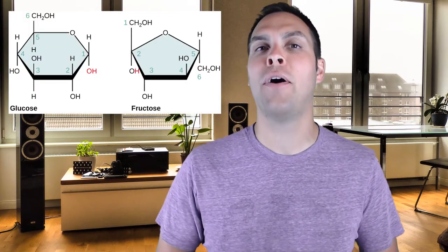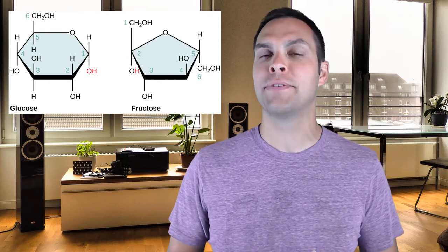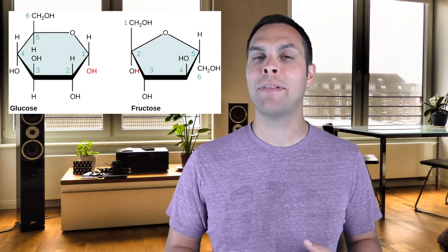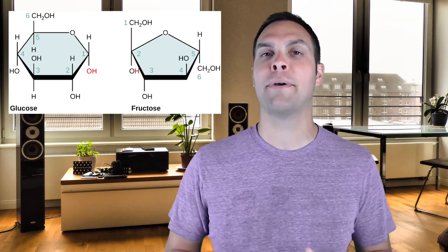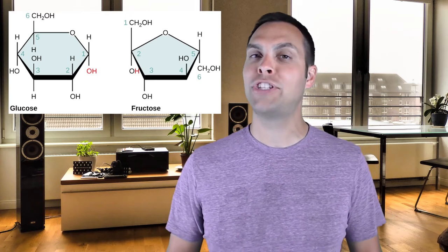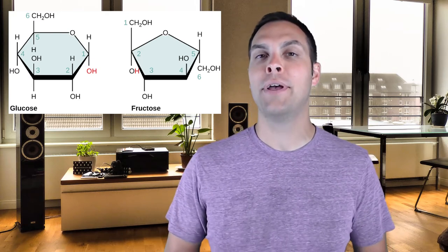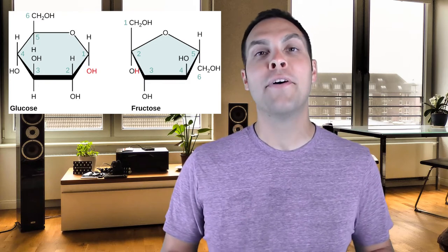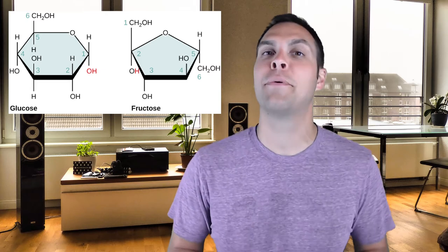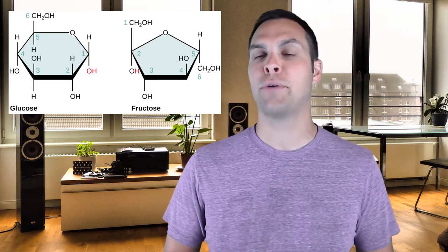Interestingly, fructose also has the chemical formula C₆H₁₂O₆, the same as glucose. But glucose and fructose, while sharing the exact same chemical formula, have different chemical structures — making them a pair of isomers. Isomers are molecules with the same chemical formula but different structures due to different bonding. This is biologically very important because glucose and fructose serve completely different functions and actually taste different.